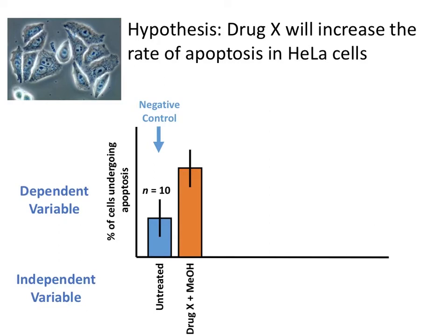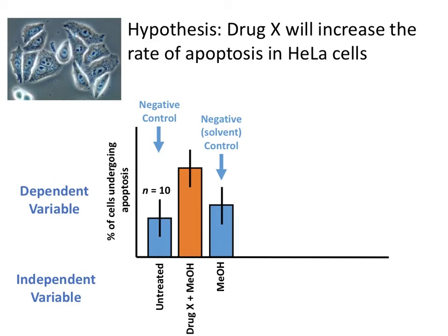However, at the moment this isn't the best experiment we could design, because what we've actually done is add two different things to the experiment. We've introduced drug X, but we've also introduced some methanol — let's imagine this drug was only soluble in methanol. So we need a better control than just untreated cells. A better negative control would be a solvent control, whereby we add the methanol to see what effect that has on the cells, and that is the best direct comparison with our drug treatment. There's actually a slightly higher rate of apoptosis in methanol-treated cells, so we'd want to do our t-test between our treatment and this solvent control, as it's a closer match.